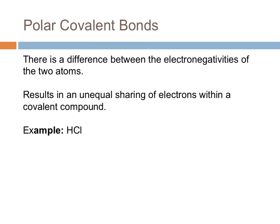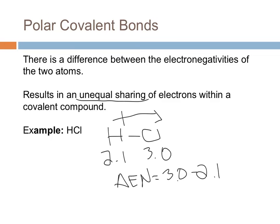The next type of bond we'll look at is a polar covalent bond. There is a difference between the electronegativities of these two atoms, and what this results in is an unequal sharing of electrons within the covalent compound. If we go back to our HCl example, we know that the electrons want to spend more time around the chlorine than they do the hydrogen, because chlorine has an EN value of 3, whereas hydrogen is 2.1. And if we took the difference between that, it's not zero. It's actually 3.0 minus 2.1, which gives us 0.9. So that means that there is unequal sharing within this chemical bond. So it is a polar covalent bond.